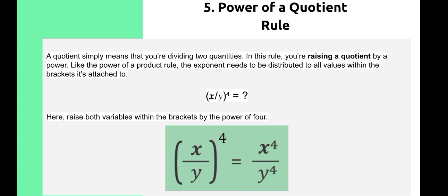Number 5, we have the power of a quotient rule. A quotient simply means you are dividing two quantities. In this rule, you are raising a quotient by a power. Like the power of a product rule, the exponent needs to be distributed to all values within the bracket. For example, (x over y) raised to the power of 4: we raise both variables within the brackets by the power of 4, giving us x raised to the power of 4 over y raised to the power of 4.